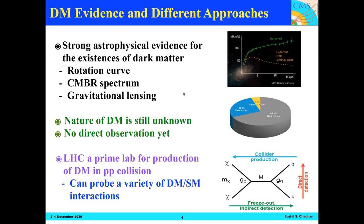The interaction diagram can be viewed in three different ways. Looking in one direction gives indirect detection; looking at the scattering of DM with standard model particles gives direct detection. For colliders, we are producing dark matter in the final states. At the LHC, we can probe a variety of dark matter and standard model interactions.